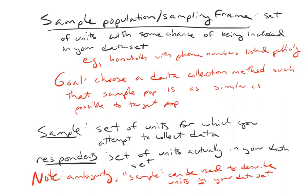I may not be reaching out to a representative set of the people who are walking by. And in addition to that, once I do reach out to people, the ones who say yes may not be representative. I find it useful to distinguish between the sample — the units you attempt to collect data on — and the respondents who actually participate. Sometimes 'sample' is directly the label for units actually in your dataset.